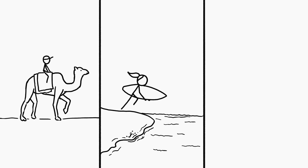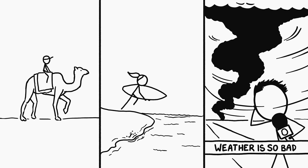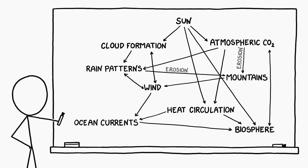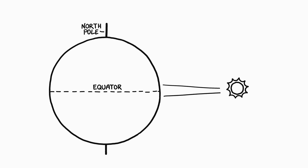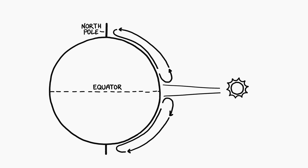Where would the deserts and forests be? And where would you go for a sunny beach vacation or to chase a tornado? This stuff is complicated, since climate depends heavily on the details of ocean currents and atmospheric heat circulation, but we can make some broad sweeping speculations based on general climate physics. The main driver of weather and climate is the Sun, which delivers more heat at the equator than at the poles. Hot air rises at the equator and flows poleward, then cooler air moves in across the surface toward the equator — this circulation is called a Hadley cell.